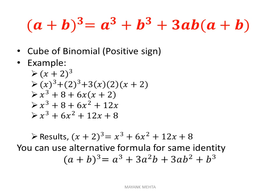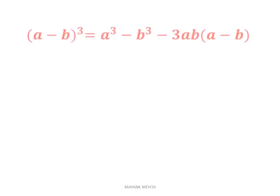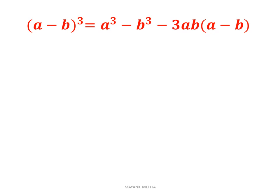You can use an alternative formula for the same identity: (a+b)³ = a³ + 3a²b + 3ab² + b³. You can use either of these two identities. Similarly, for (a−b)³: it equals a³ − b³ − 3ab(a−b), with a negative sign.